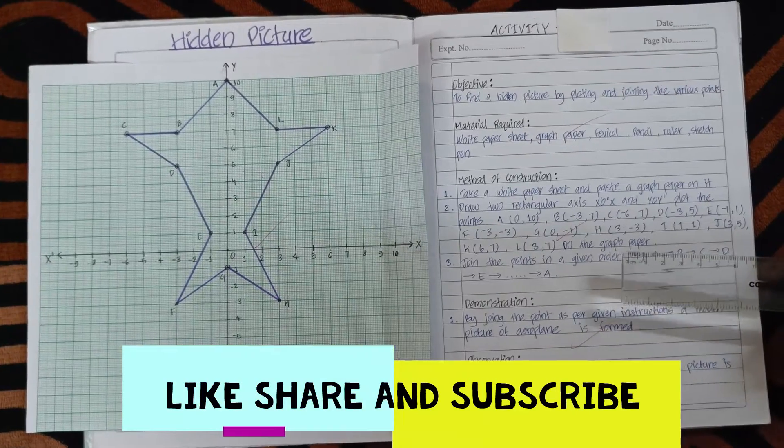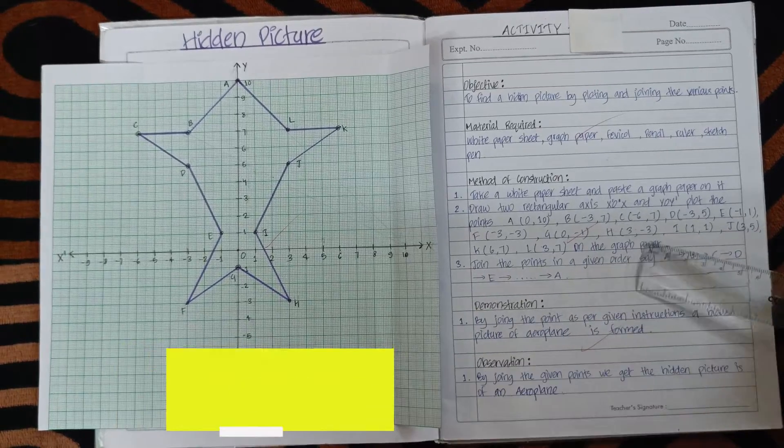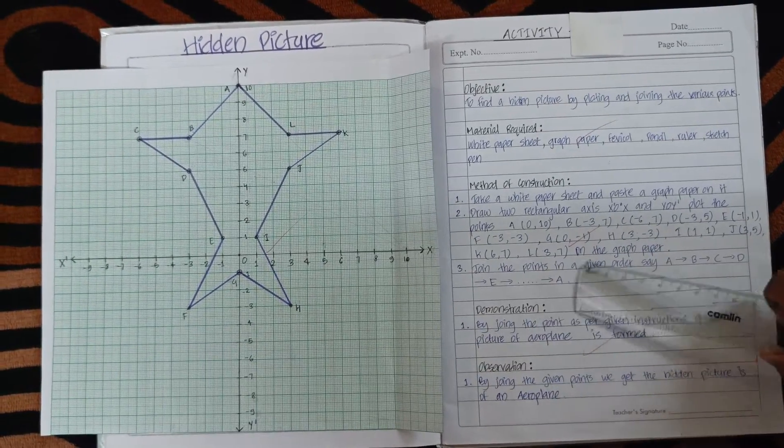Similarly, we will plot the other points D, E, F, G, H, I, J, K, and L on the graph.